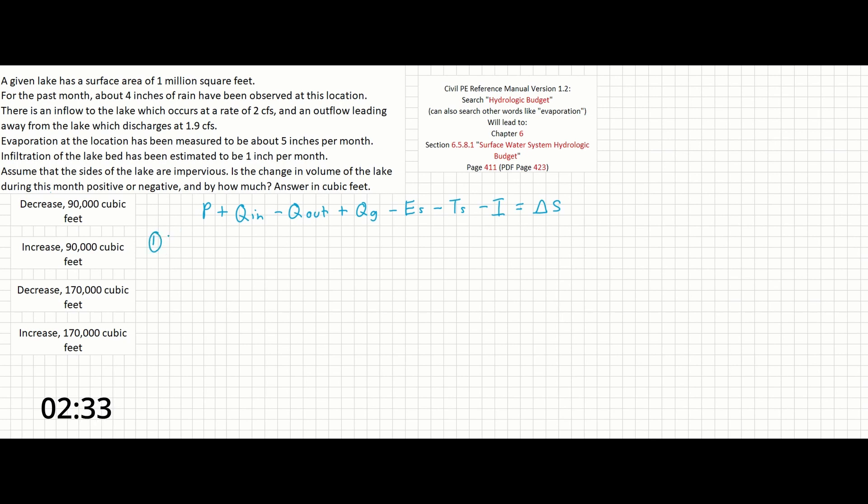We're going to start by solving for P. P in this case is precipitation, which is noted to be 4 inches over 1 million square feet. So we have 1 million feet squared times 4 inches times 1 foot over 12 inches. And that will give us 333,333 cubic feet.